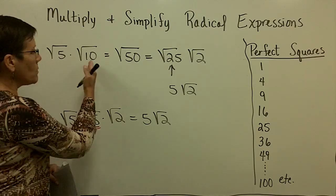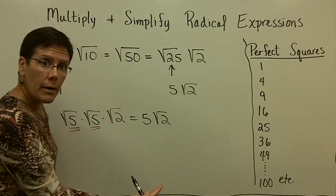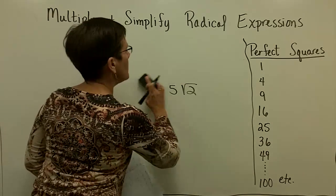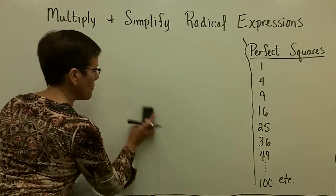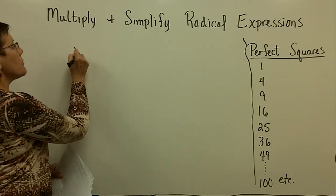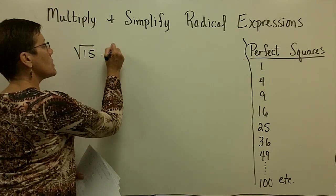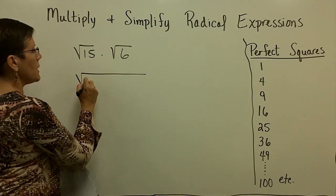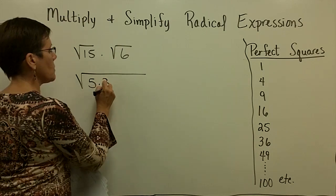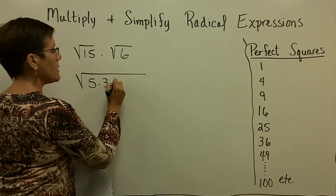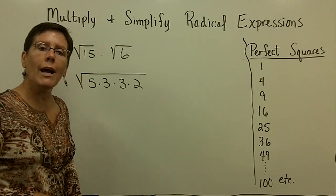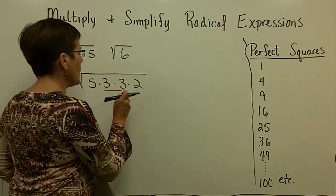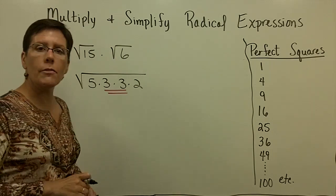So I can either multiply them together and then break them apart, or I can break them apart first. So the other example that I have might lend itself as well. Let's see, the square root of 15 times the square root of 6. I think I'll go this way. Let's write 15 as 5 times 3, and let's write 6 as 3 times 2.